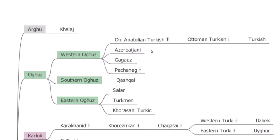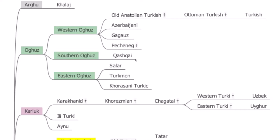We have Gagauz — according to theories, they are descendants of the Pechenegs or Cumans. Their language is almost identical to Turkish, very similar to the Balkan accent of Turkish. We have Pechenek, which is part of the 22 Oghuz tribes but according to Kashgari and some written sources had its own distinct language. We have Kashkai — nomadic people like the Yörüks in Anatolia, descendants of Seljuks who stayed in southern Iran. They are still nomadic today and speak a language similar to Azerbaijani.